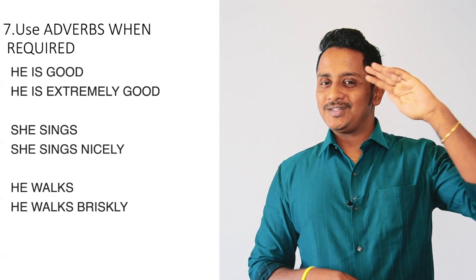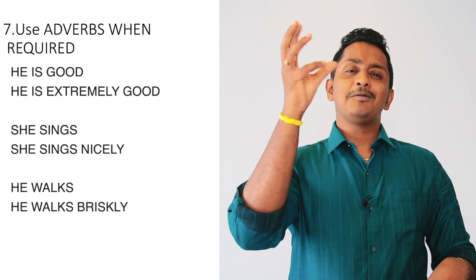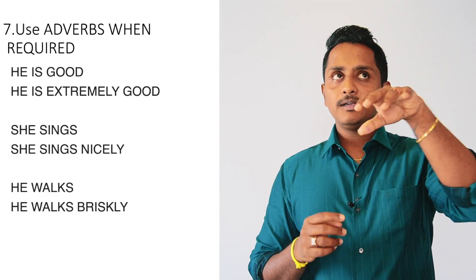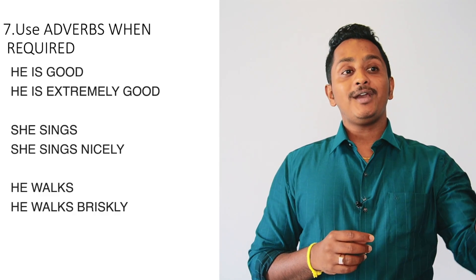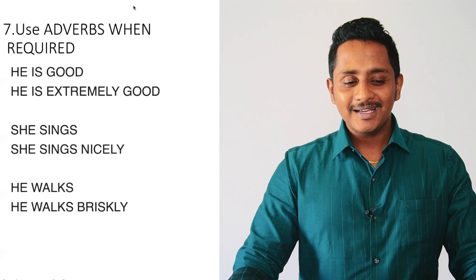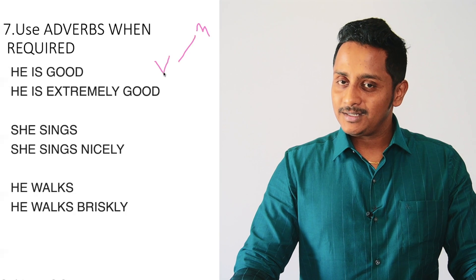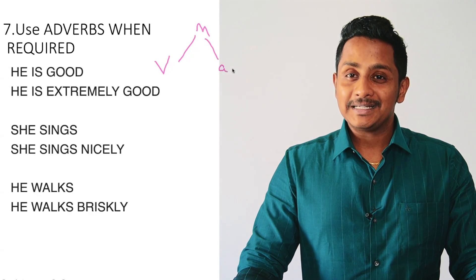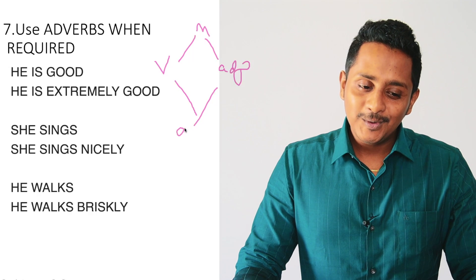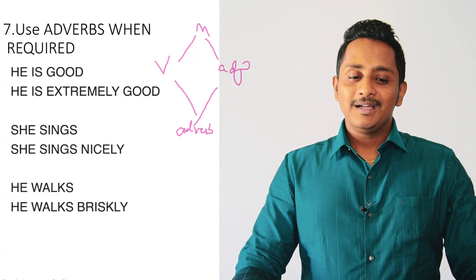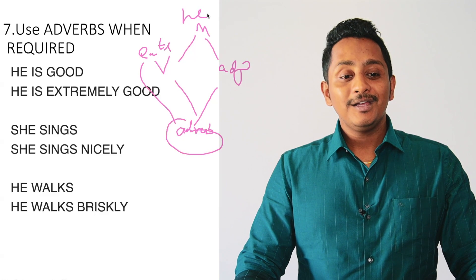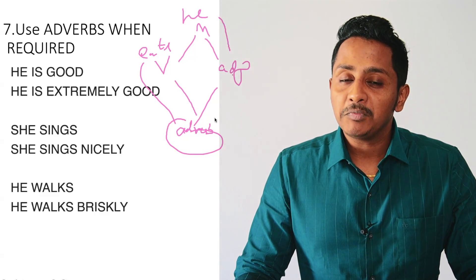Shortcut number seven: use adverbs when required. A noun performs an action — that's a verb. A noun has characteristics — that's an adjective. Now, if you want to further describe a verb or an adjective, you use an adverb. Think of it this way: noun → verb/adjective → adverb. The adverb further describes the verb or adjective.